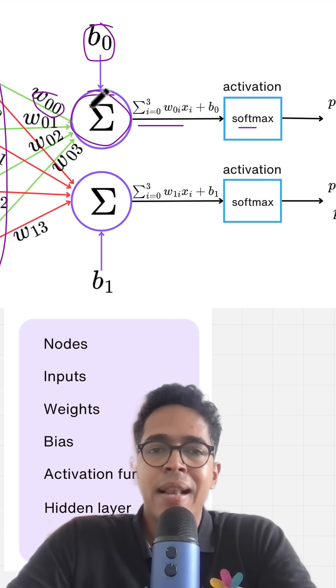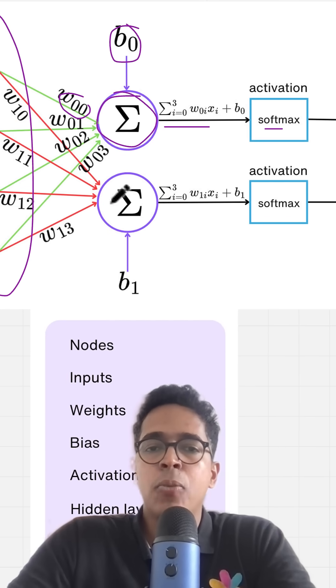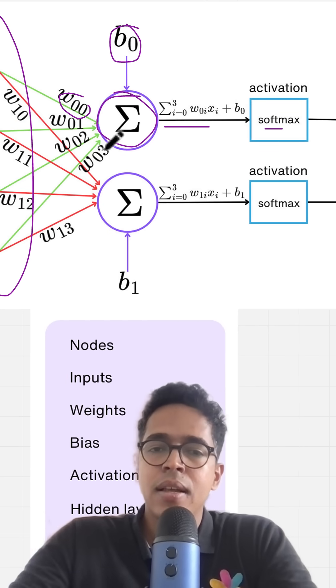If you have multiple layers between the input and output layers, they are called hidden layers. And such a neural network is called a deep neural network.